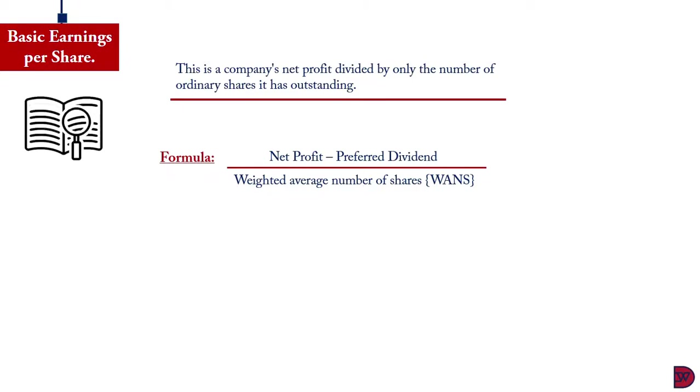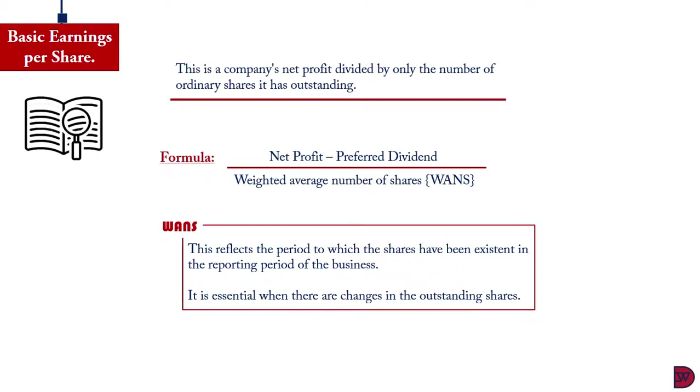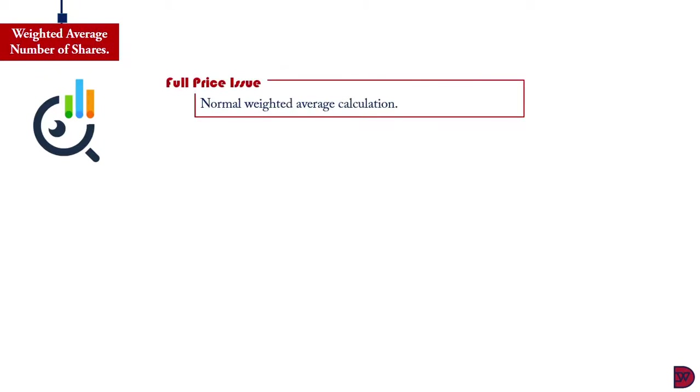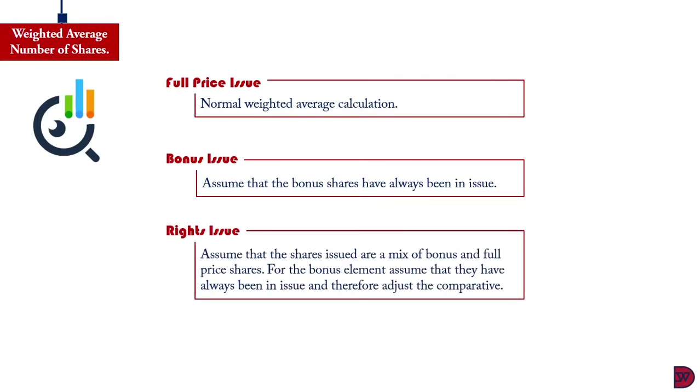What is the weighted average number of shares? This reflects the period to which the shares have been existing in the reporting period of the business. It is essential when there are changes in the outstanding shares. We have a full price issue when a share has been issued at its market value. When we come to the bonus issue, we assume that the bonus was issued at the beginning of the year and that the bonus issue has been with the business for the entire accounting period. Therefore, we don't have to prorate it. However, when we come to right issue, we'll assume that the shares is a mix of bonus and full price shares. For the bonus element, we'll have to assume that they have been in issue and therefore adjust the comparative.